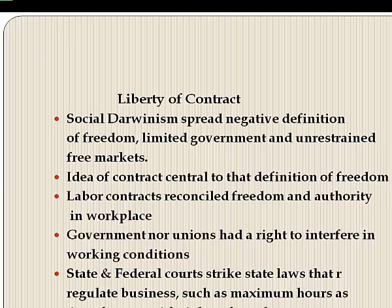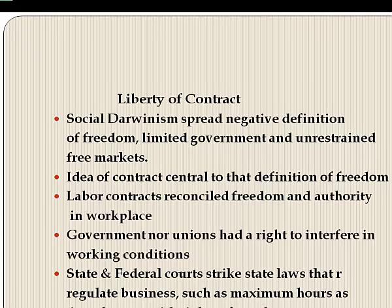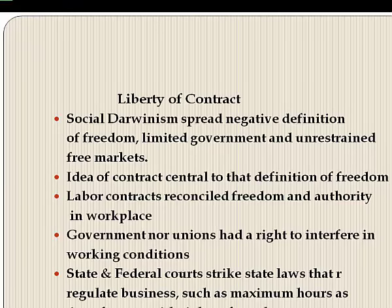Social Darwinism helped spread a negative definition of freedom that limited government and unrestrained free markets. It became very popular among business and congressional classes in the late 19th century. The idea of contract was central to this definition of freedom — labor contracts reconciled freedom and authority in the workplace. As long as independent individuals freely contracted with each other, neither government nor unions had a right to interfere with working conditions.